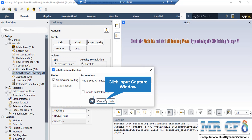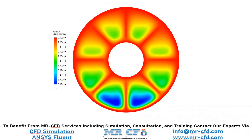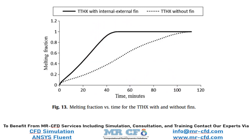The higher the mushy zone constant value, the steeper the transition of the velocity of the material to zero as it solidifies. Very large values may cause the solution to oscillate. In this contour, you can easily see the temperature distribution inside the computational domain and how the PCM material's temperature has changed over time. In this section, we are going to validate the results obtained by our CFD simulation with the results obtained in the paper. For example, in this slide, you can see figure 13 extracted from the paper, which reports the melting fraction of the PCM material over time, and we are going to validate this graph using our CFD data.